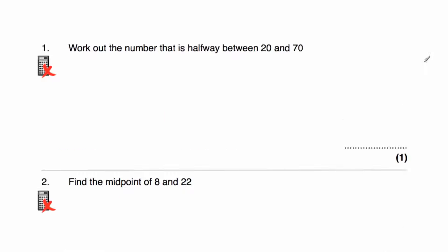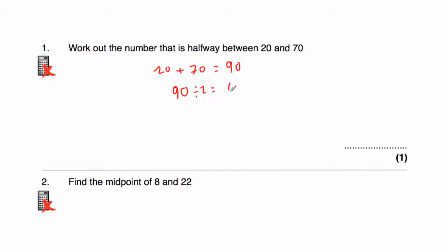Okay, so let's get started. I'm just going to be doing the answers as I would normally do them. Question one says: work out the number that's halfway between 20 and 70. Whenever I'm finding the midpoint of two numbers I like to add them together and divide by two. So 20 plus 70 is 90, and then 90 divided by 2 is equal to 45.